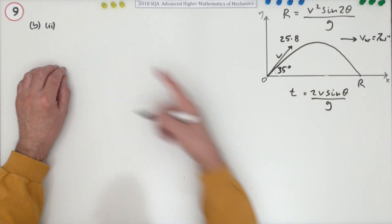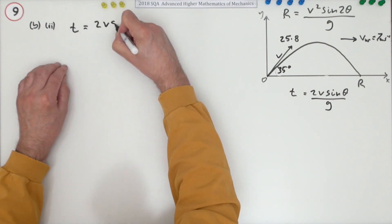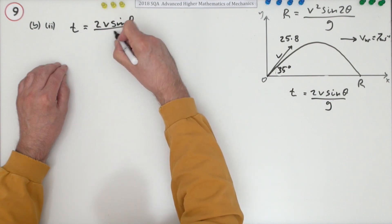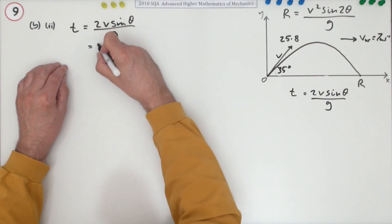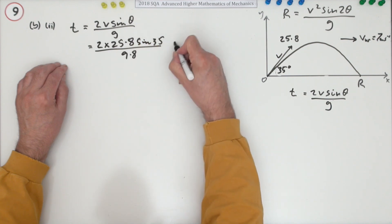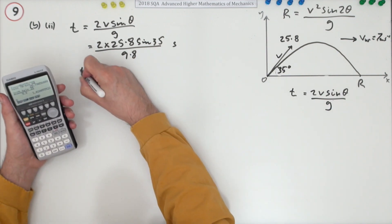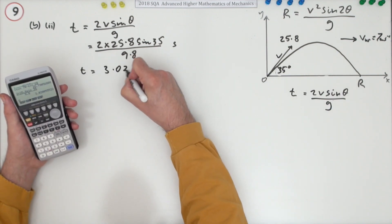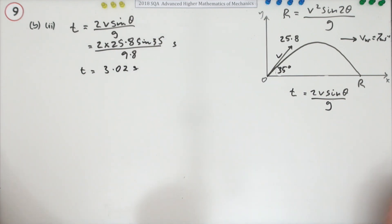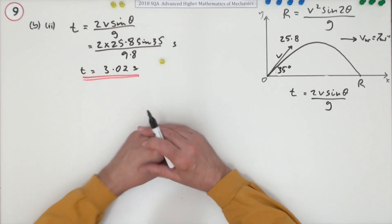So for this part, what would the time of flight be? So the time of flight is going to be, and you've already got this, 2 V sine theta upon G. So that's 2 times 25.8 sine 35 upon 9.8 seconds. And when you put that in, you get the time of flight, this time to be 3.02 seconds. It seems to be one mark, for getting the time of flight. It's just a case of how you're going to proceed with that now.